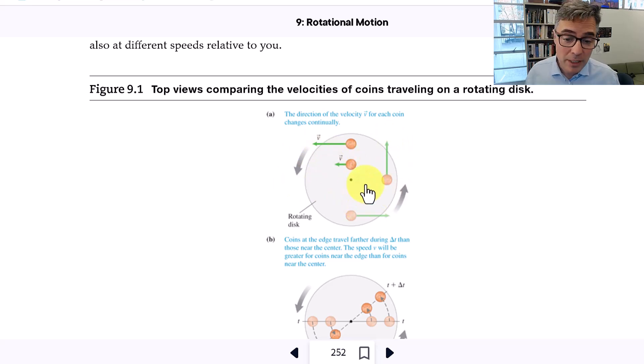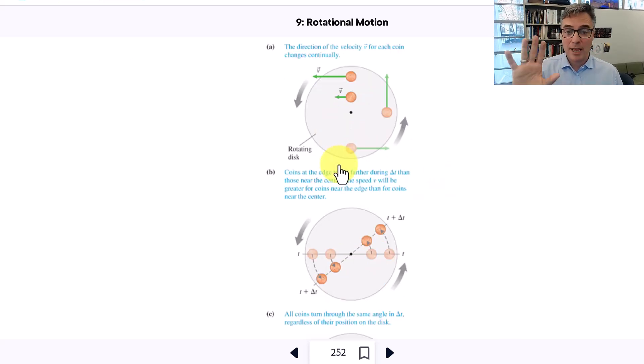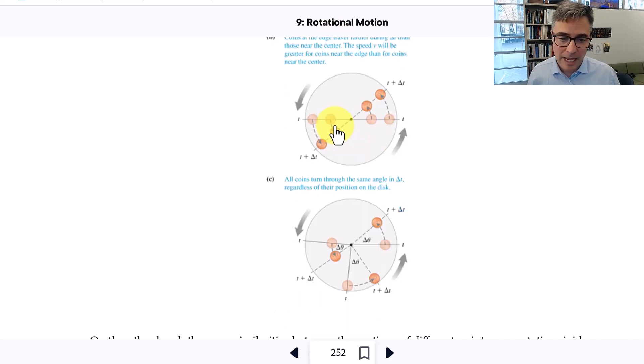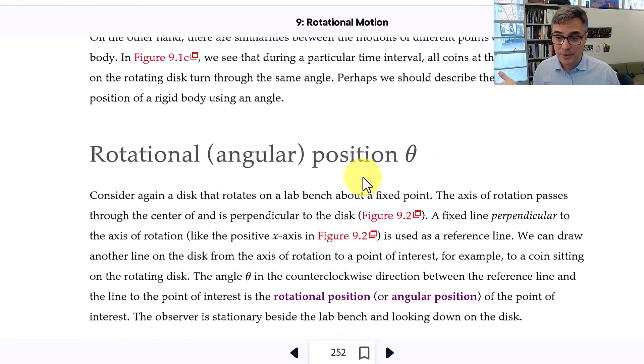Basically you have a rotating object like a disk and you can think about a coin sitting on that disk as you're viewing it from the top and it's rotating around. The coin will be going at different speeds depending on how far it is from the axis. But no matter what distance it is from the axis, it'll rotate through the same amount of angle per time. So we define these new things.